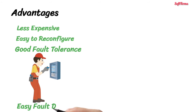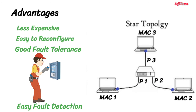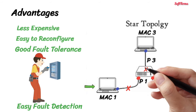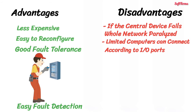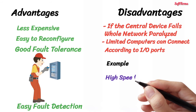Fault detection is also easy because we only need to locate a computer which is not receiving data. However, if the central device goes down, the whole network is paralyzed. One more limitation in star topology is that the number of computers in a network is limited by the number of input-output ports in the central device. An example of star topology is a high-speed LAN.